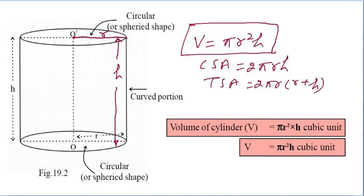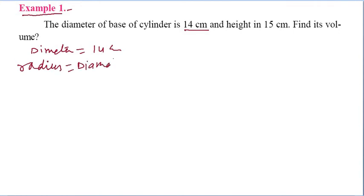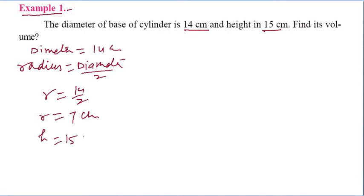Come to Example 1. The diameter of the base of the cylinder is 14 cm. So radius = diameter / 2 = 14/2 = 7 cm. And the height is 15 cm, so h = 15 cm. Now find the volume.